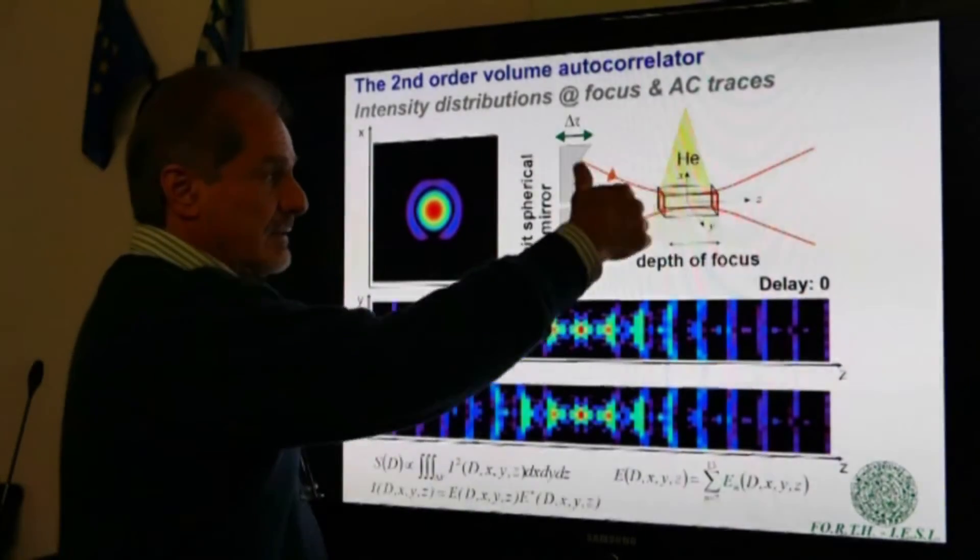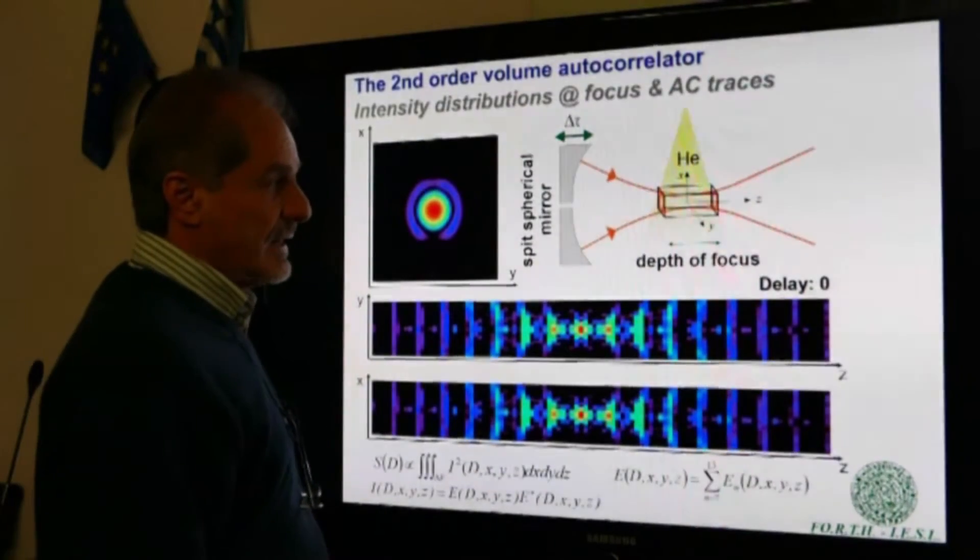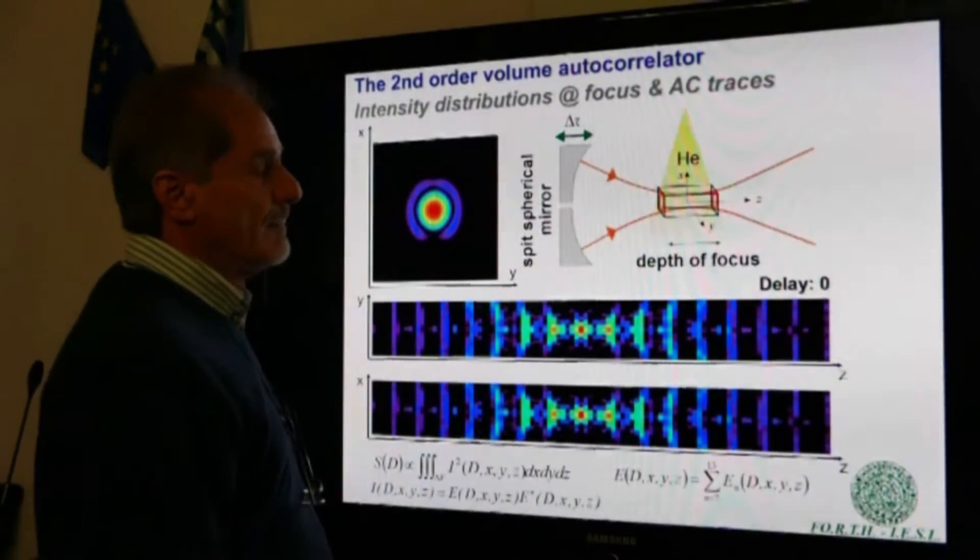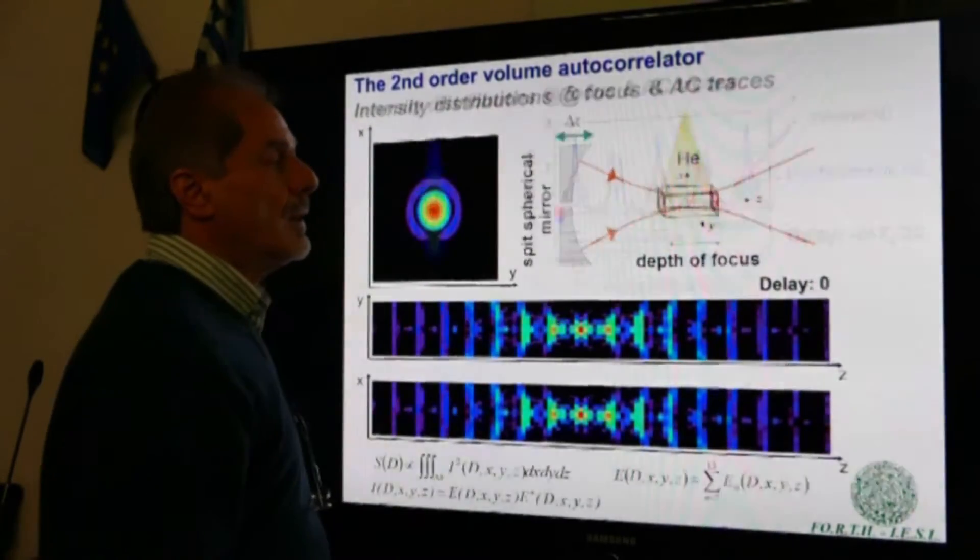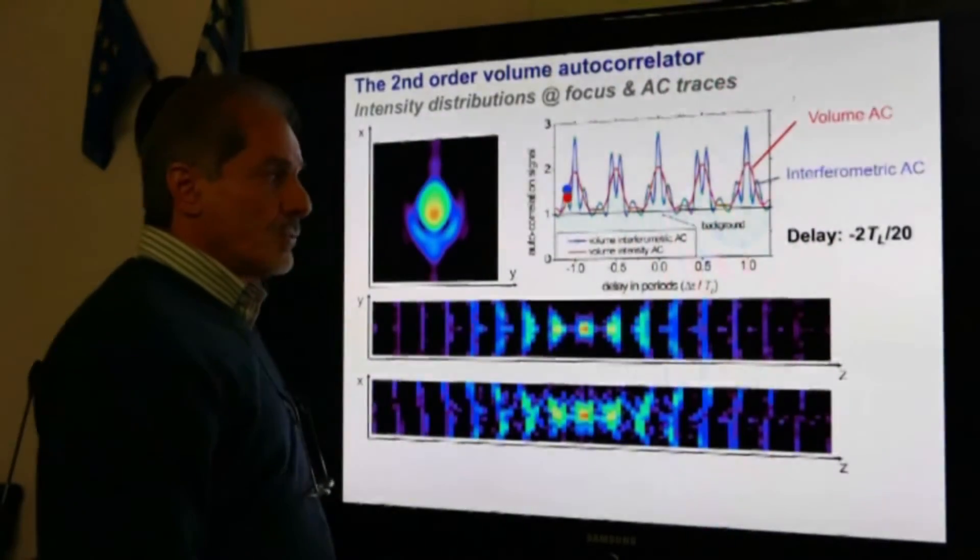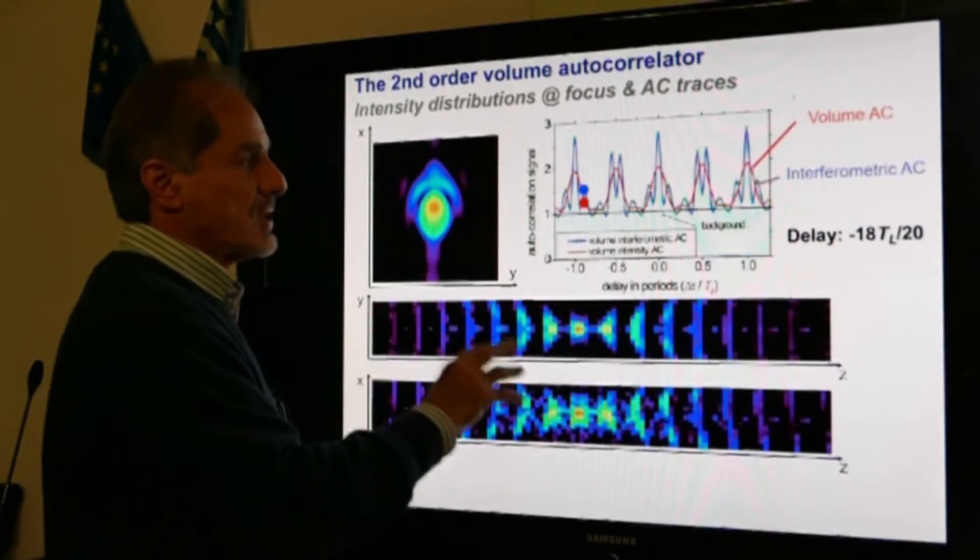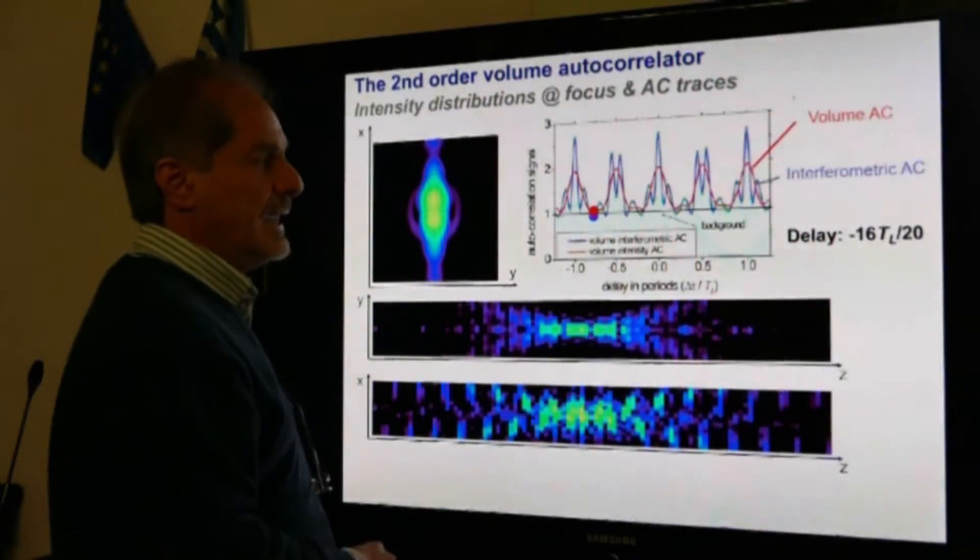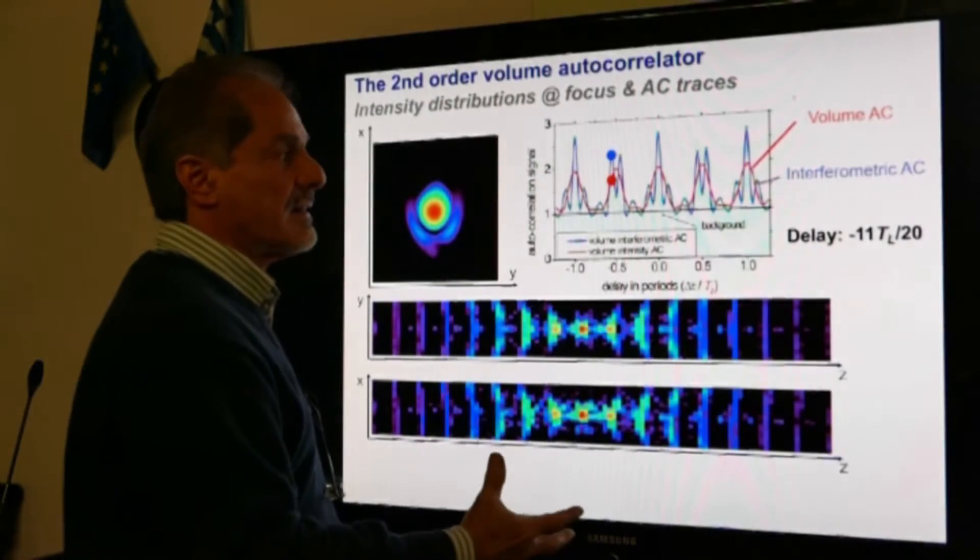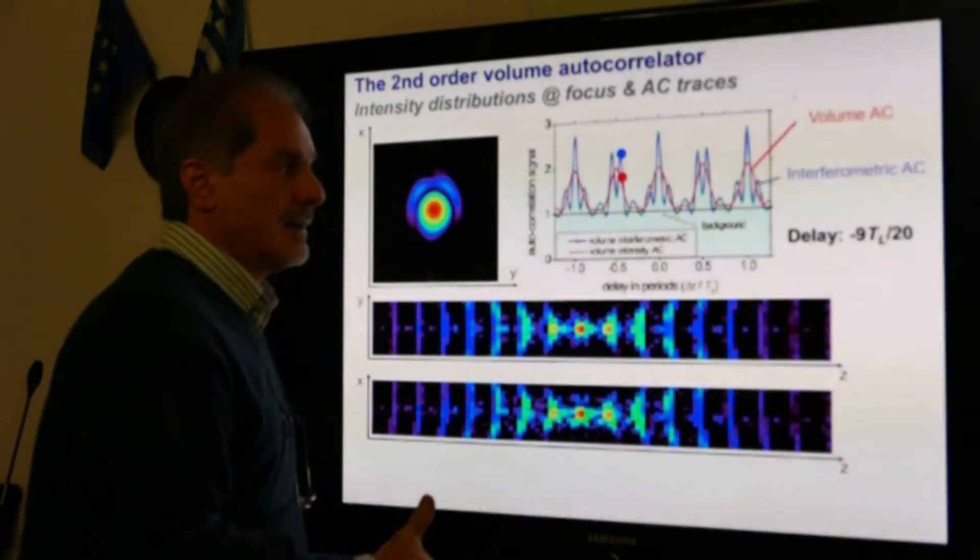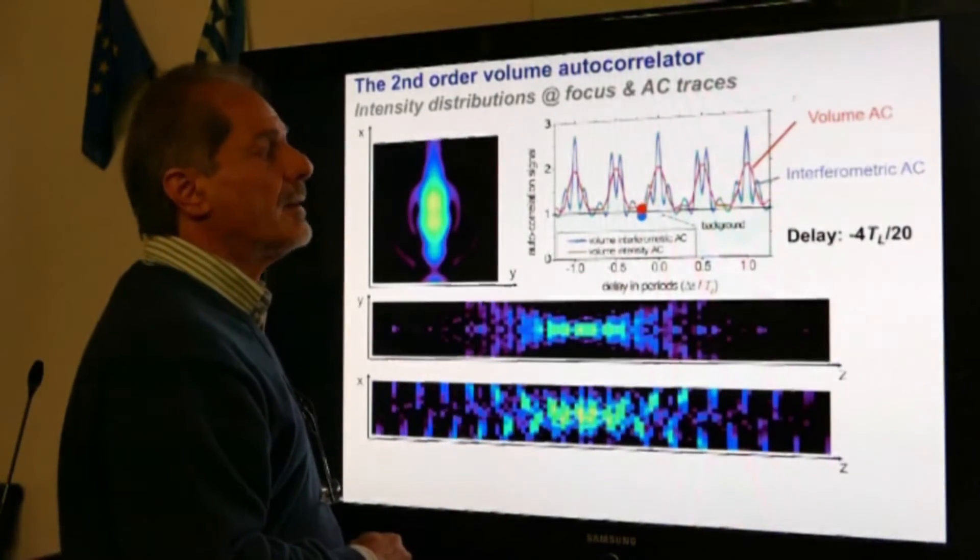Then having this intensity distribution, one can integrate over the volume the square of the intensity and get the ion signal of the two-photon ionization process. This can be done as a function of the delay between the two XUV pulses, and this is shown here. You see how these distributions are changing as a function of the delay.